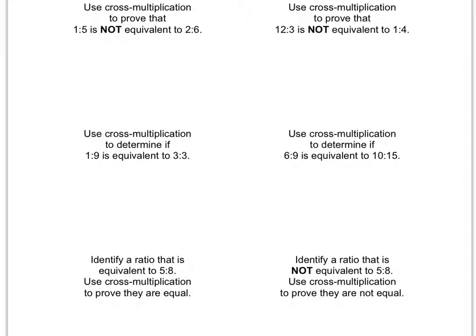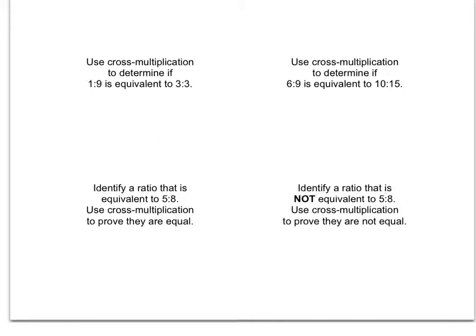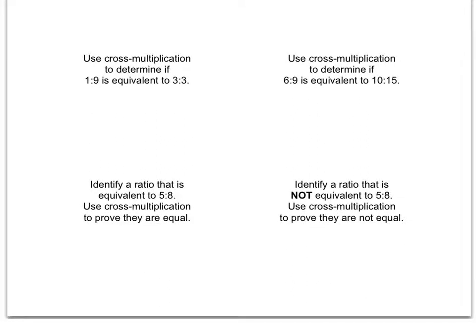But here you'll want to write if they are equivalent or if they are not equivalent, depending on what your results are. If you get a true statement then that means they are equivalent. If you get a false statement then it means they are not equivalent. And then here it says identify a ratio that is equivalent to 5 eighths, use cross multiplication to prove they are equal, and then identify a ratio that is not equivalent to 5 eighths and use cross multiplication to prove they are not equal. So all of these use the similar process.